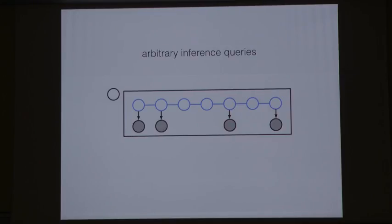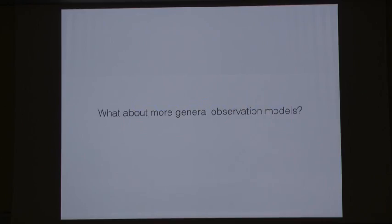One thing I want to highlight is that using these methods, we can answer arbitrary inference queries. If you give me any pattern of observations and ask me to do inference on the latent variables for the rest, no problem — we can do that just using graphical model ideas. Of course, we don't always think we can model our data using those special structures. So you might ask: what about more general observation models? What if we're modeling a time series that doesn't look anything like linear Gaussian — maybe it's a movie, a sequence of images?